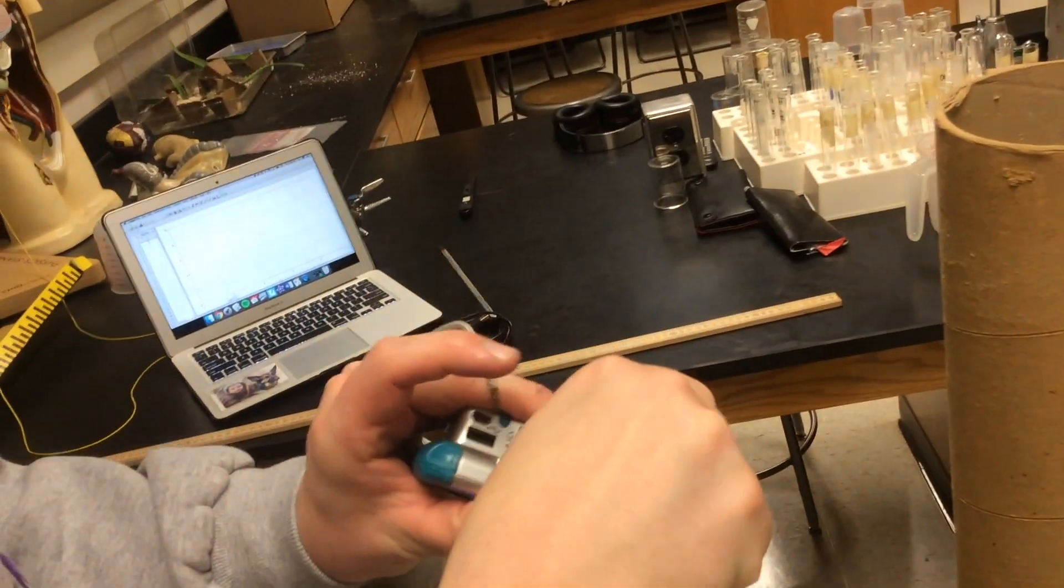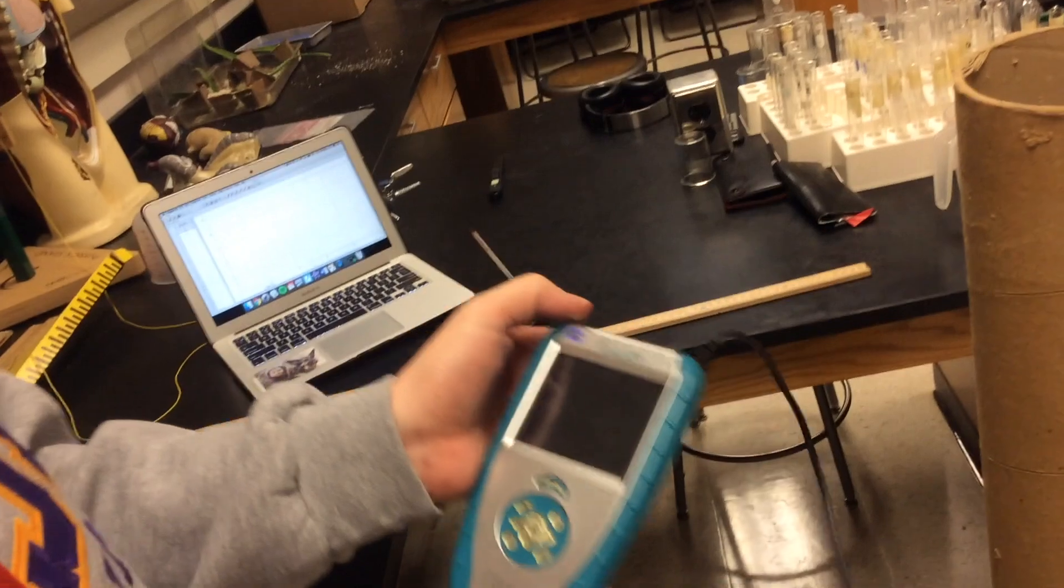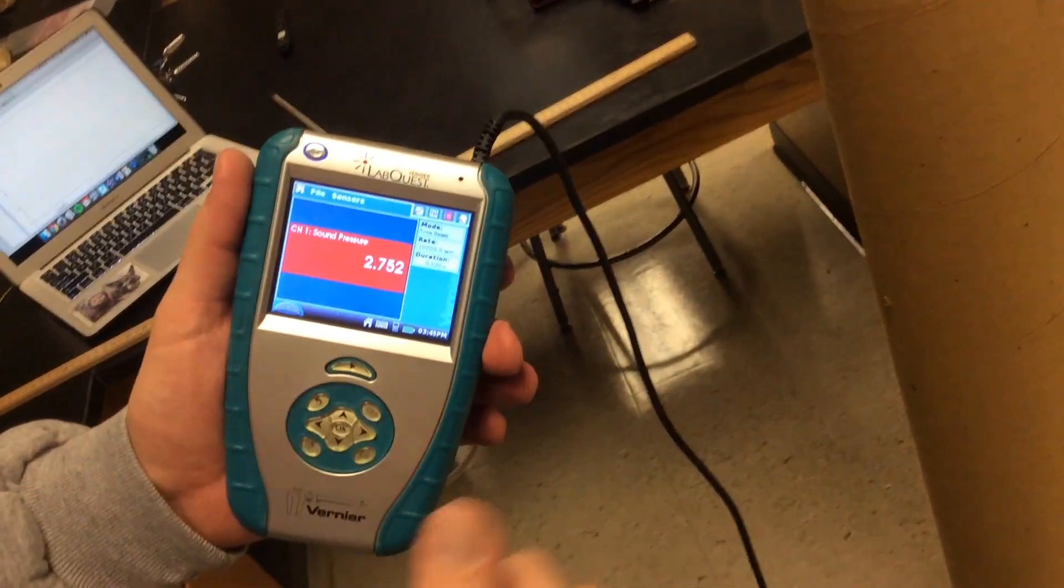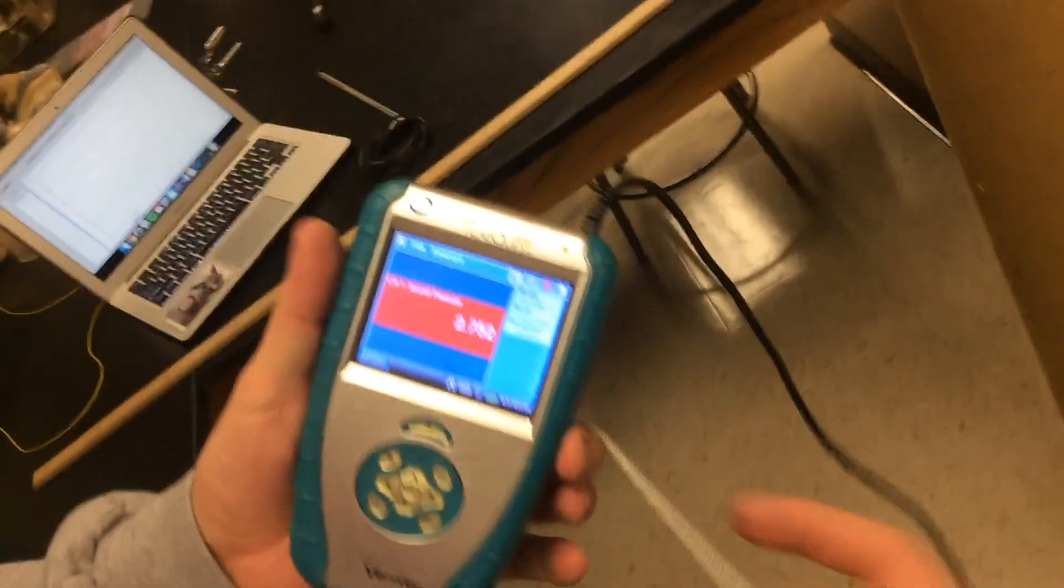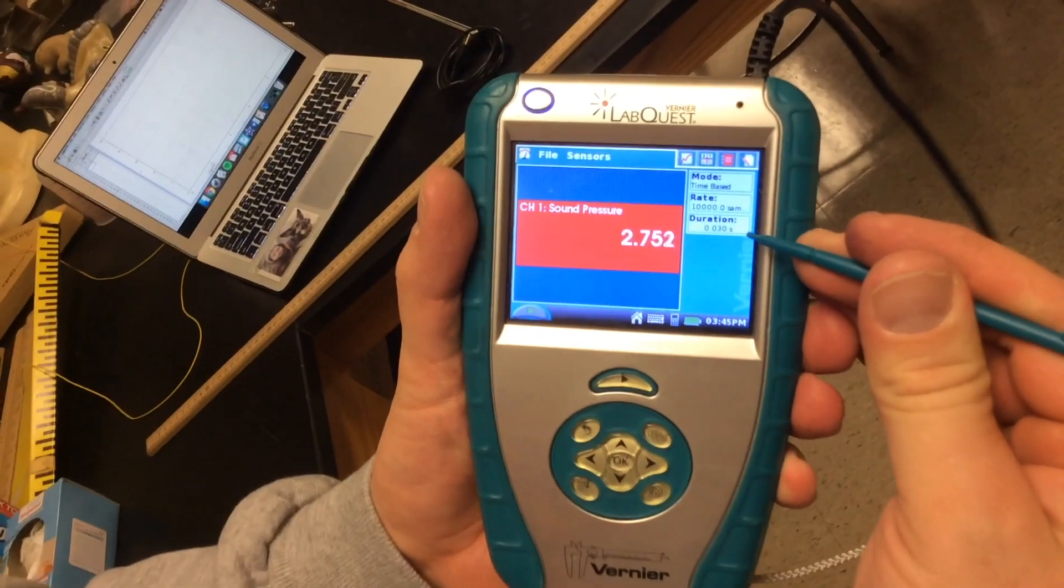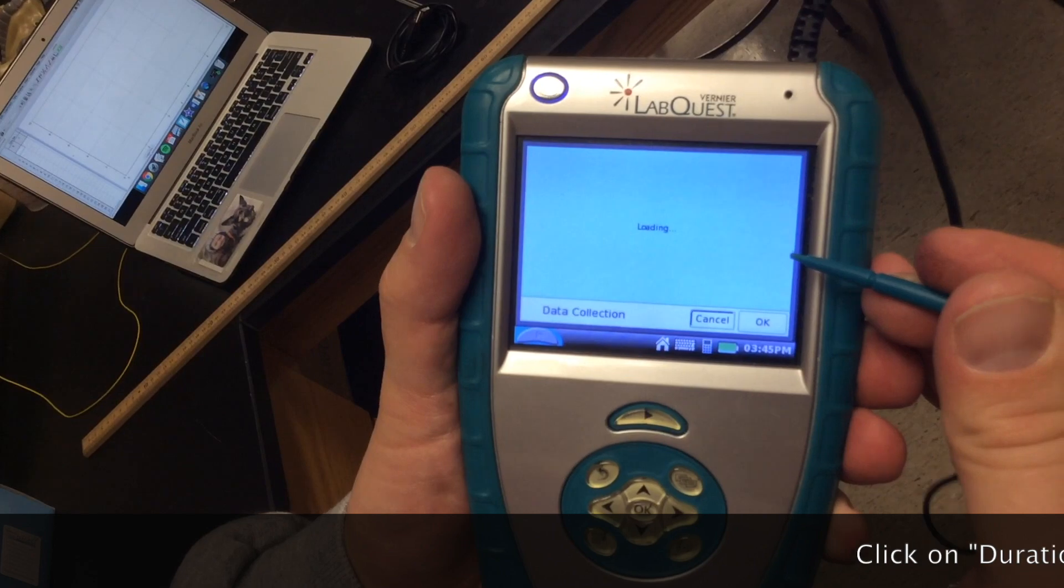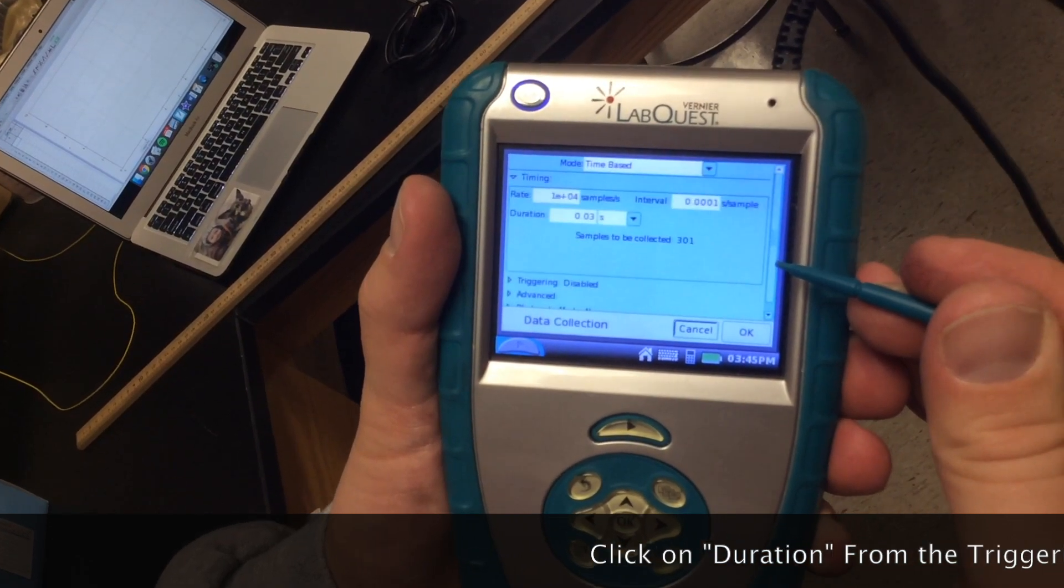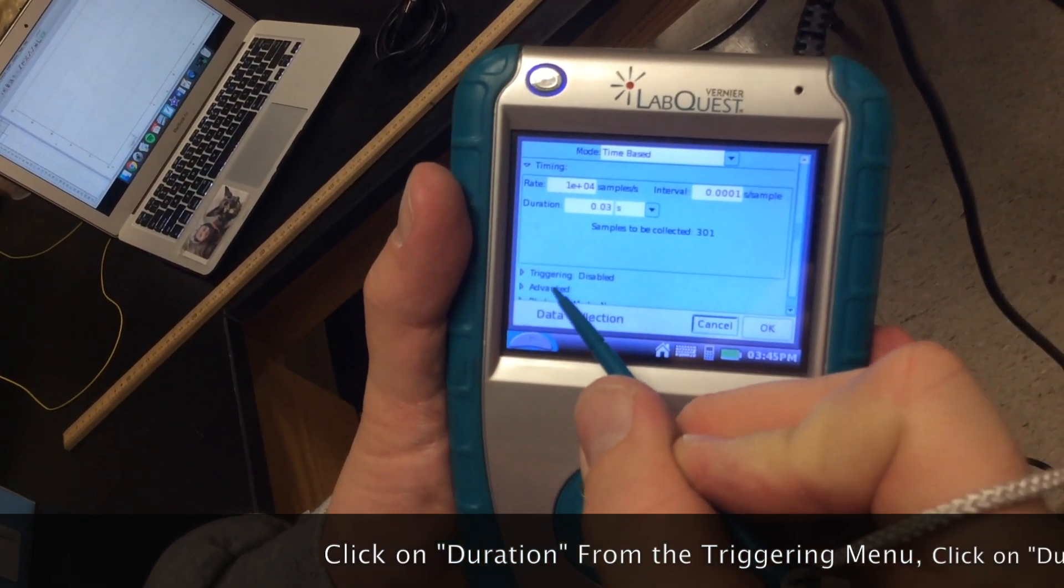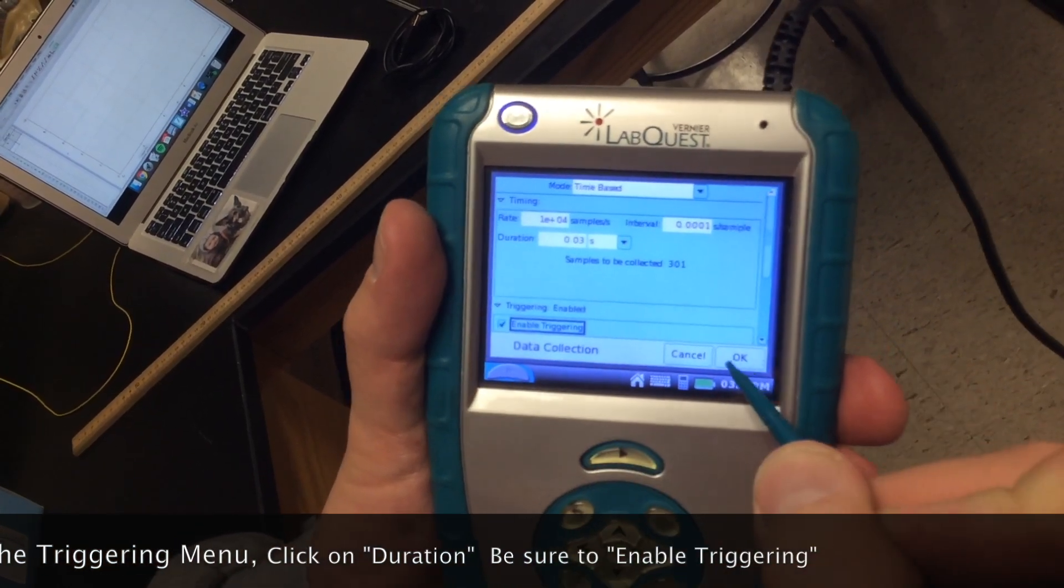This is how we go ahead and put it together. Plug in the microphone. As soon as you do that, make sure it stays on. The screen should bring this up and what we want to do is simply just change when it starts taking data. So if we hit Duration here, and what we want to do is see over here where it says Triggering Disabled, do the drop down menu and hit Enable Triggering.